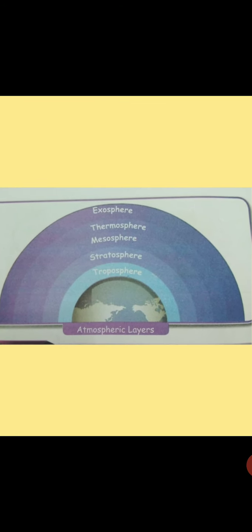Next, the diagram part — atmospheric layers. There are five layers in the atmosphere: the first is troposphere, second stratosphere, third mesosphere, fourth thermosphere, and fifth exosphere.